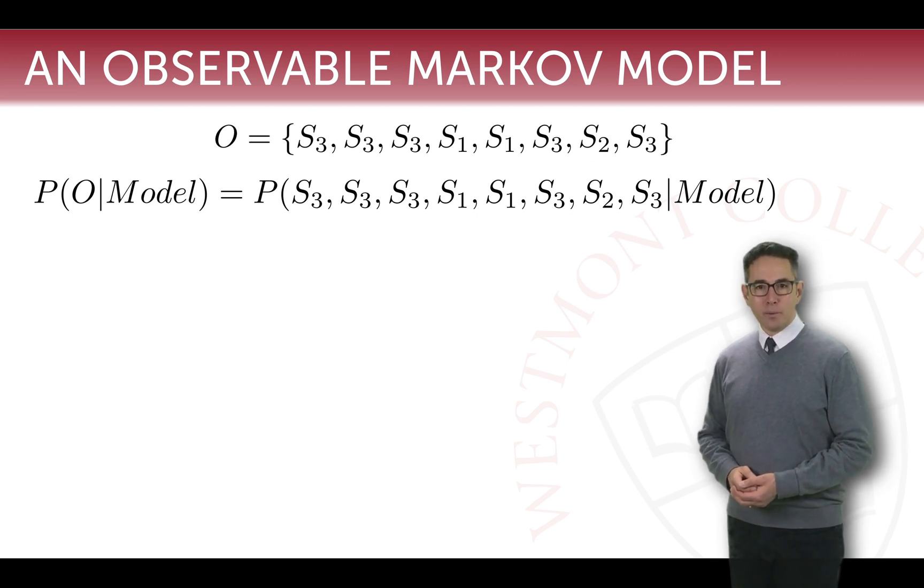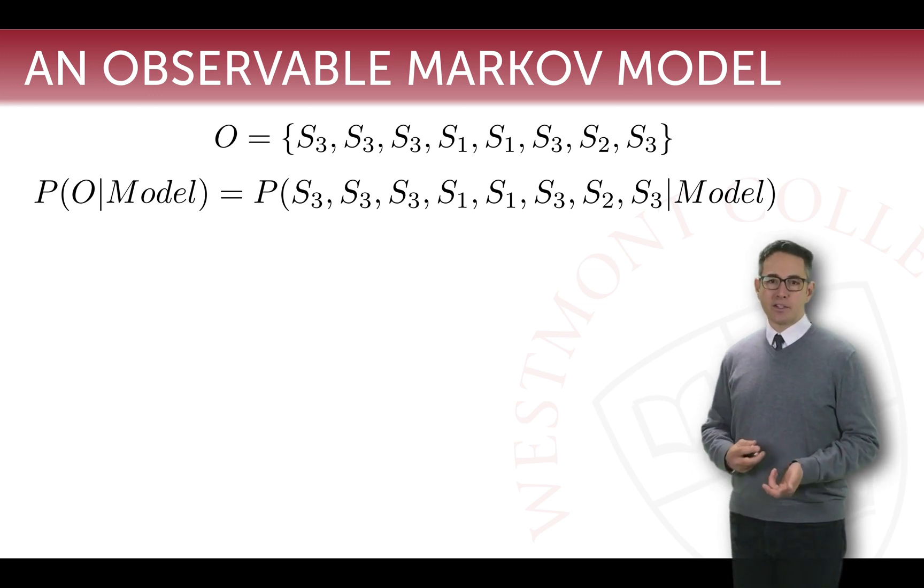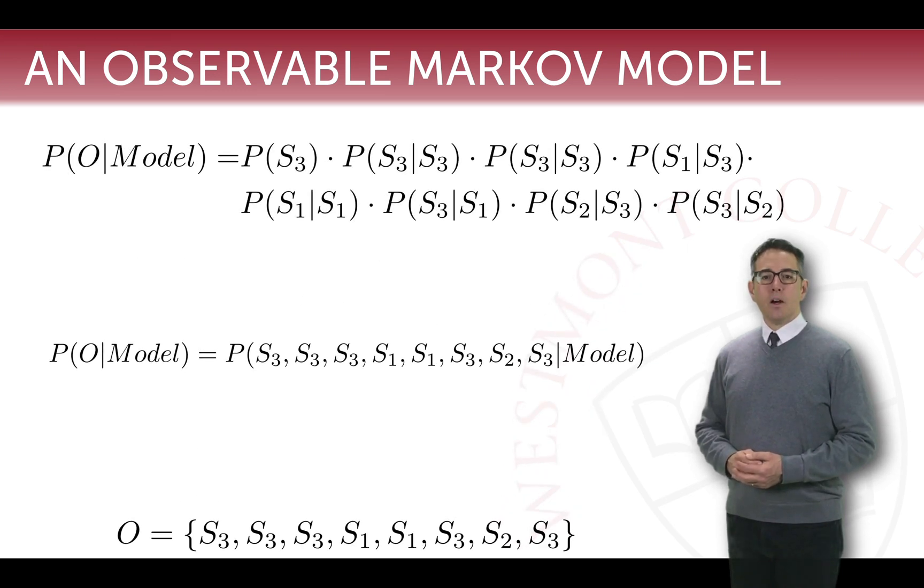We can write that more formally and say that the probability of our observation sequence, given our model, can be written as the probability of seeing the sequence S3, S3, S3, S1, S1, S3, S2, S3, given our model. Just expanding our observations there, so we can see where we're going.